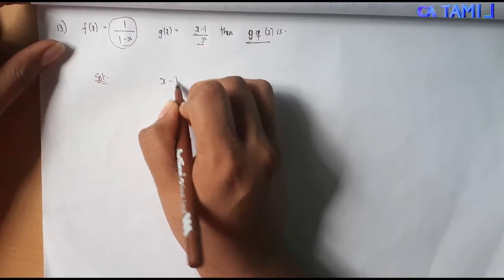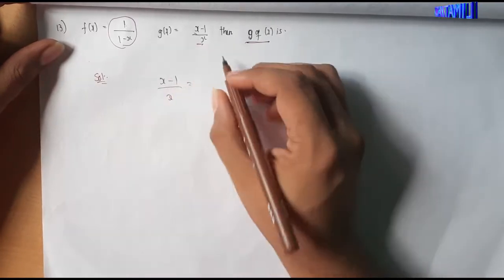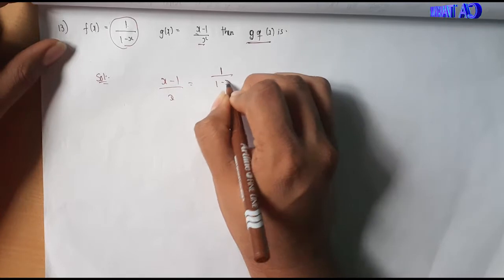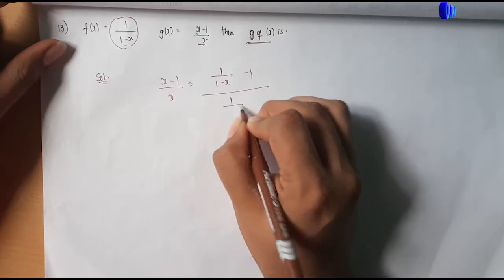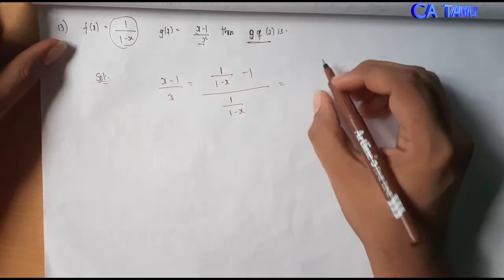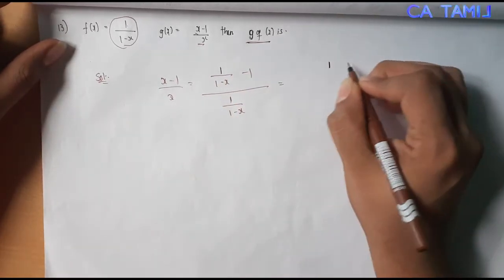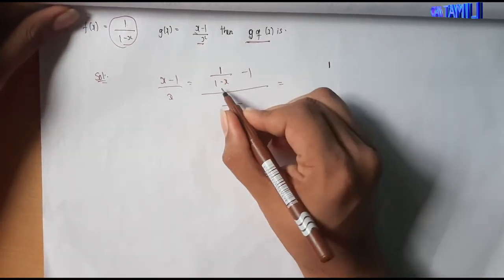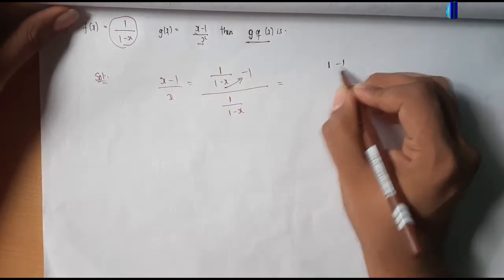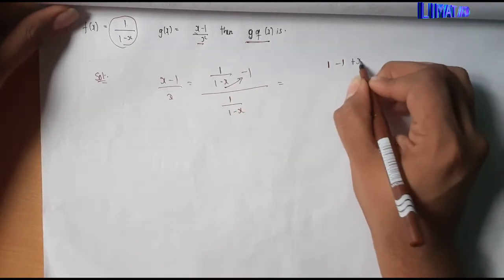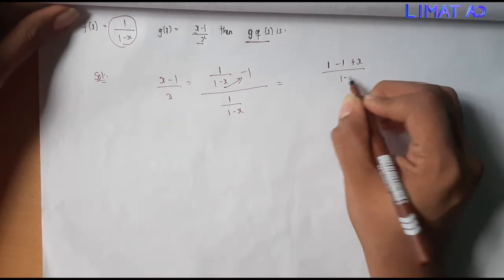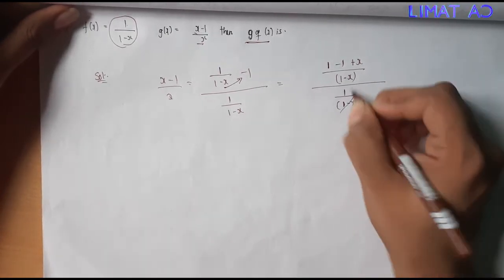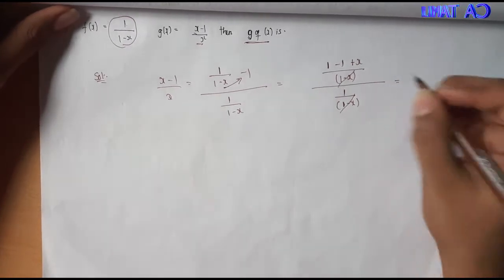So we apply g of x. We apply x minus 1 divided by x. So x is 1 divided by 1 minus x — apply 1 divided by 1 minus x. We apply cross multiplication: x minus 1. First step done. Now we apply x minus 1, plus x. So x minus x cancel. x divided by 1 minus x, then 1 divided by 1 minus x. So 1 minus x and 1 minus x cancel.